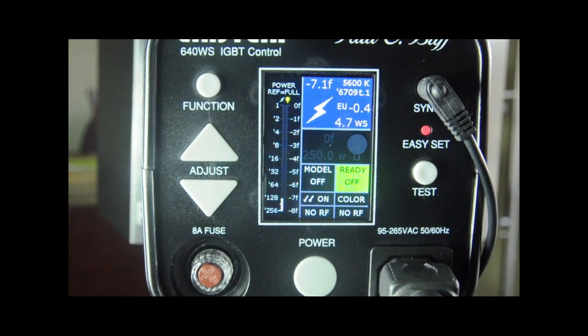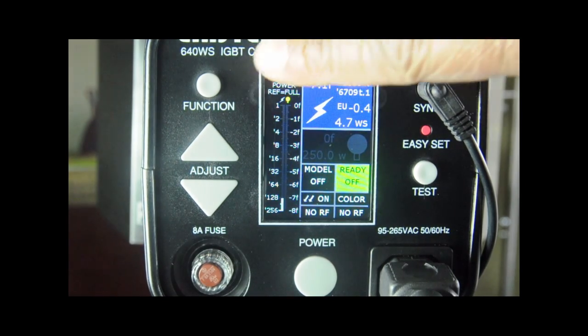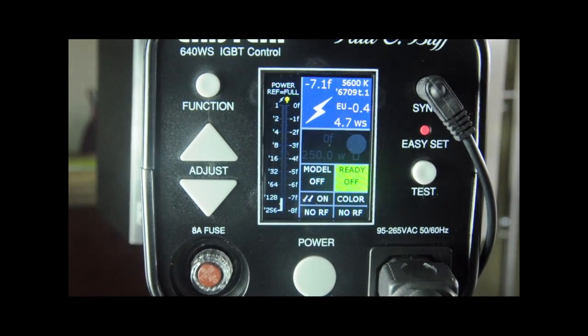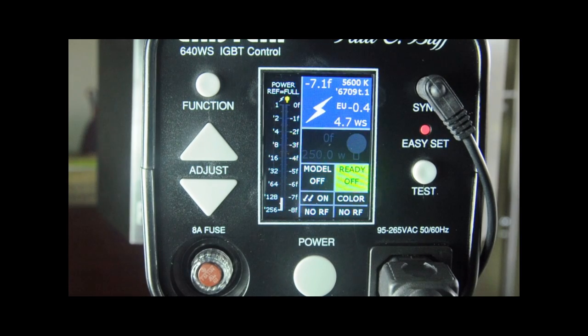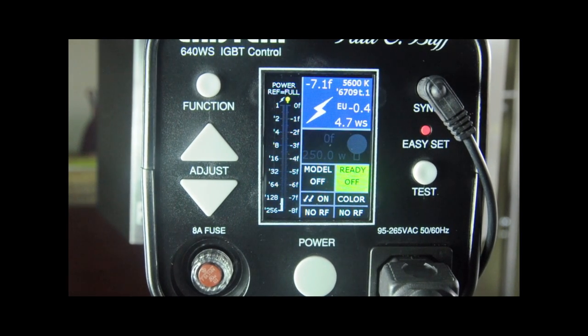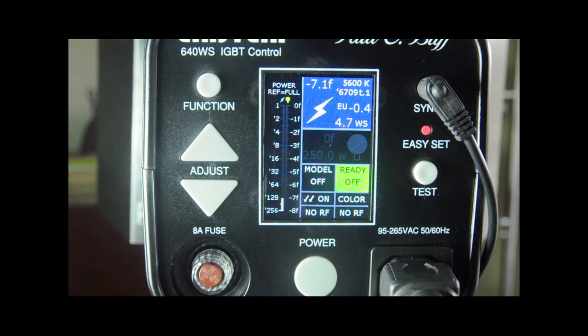You also get a very short flash duration. That's due to the IGBT circuitry that you see there. What that does is as soon as your strobe goes off, it cuts the power so it doesn't have any light tail at the end, and you end up with a much shorter flash duration.